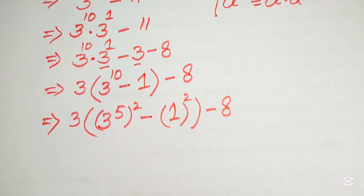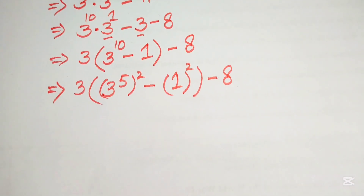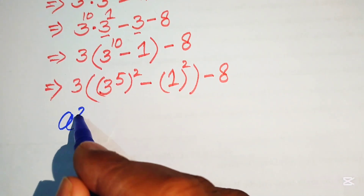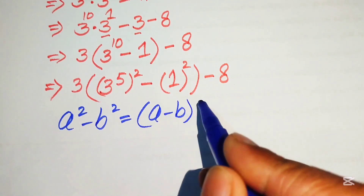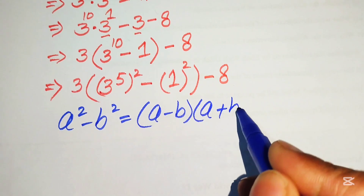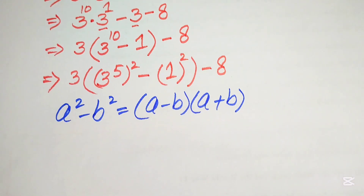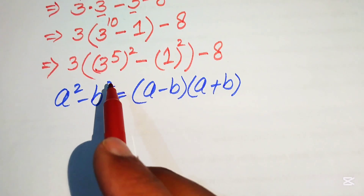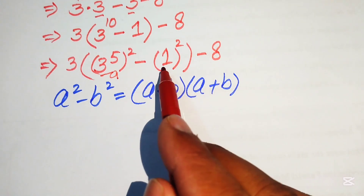Now we need to use the algebraic identity: a squared minus b squared equals a minus b times a plus b. Here, 3 to the power of 5 is our a and 1 is our b, so we apply this formula to those terms.